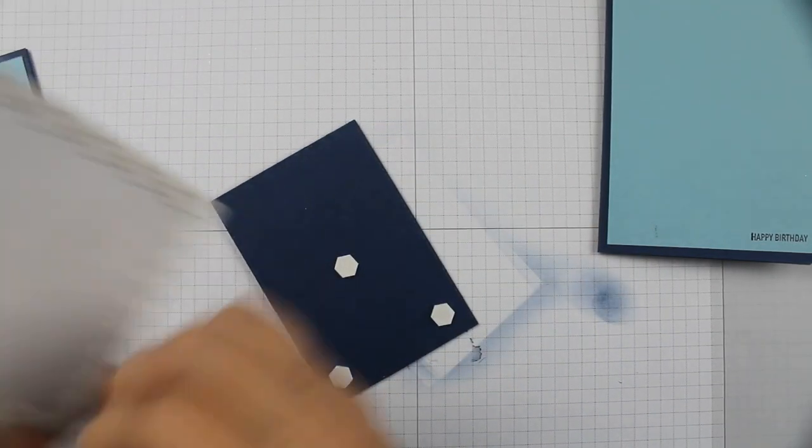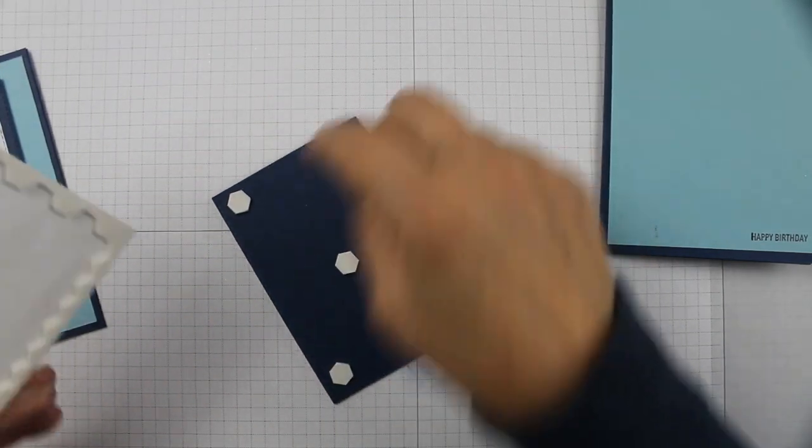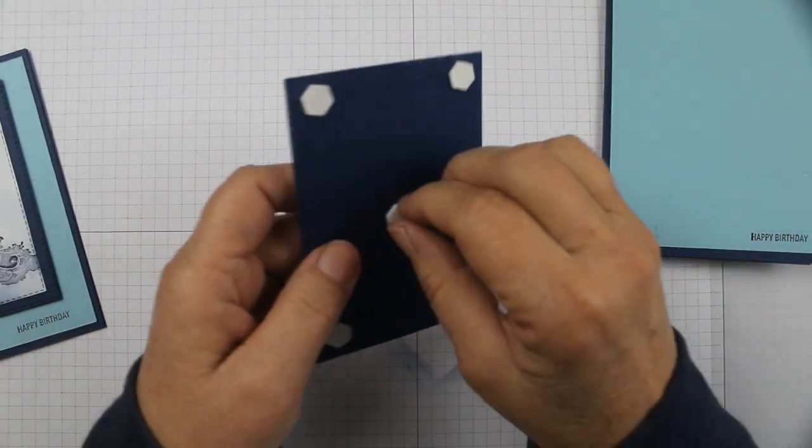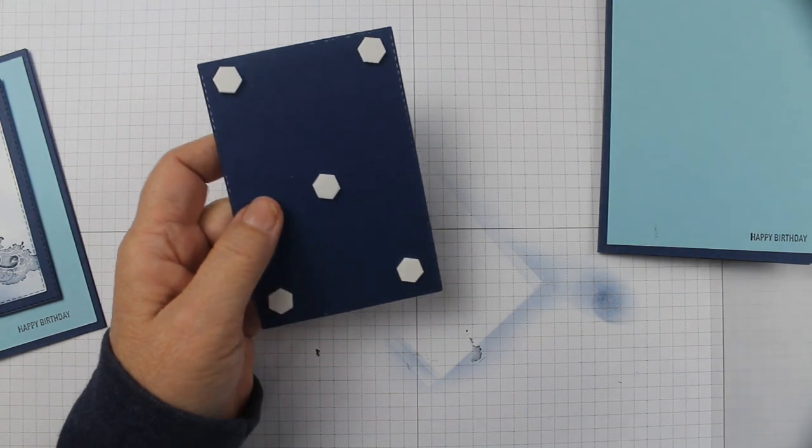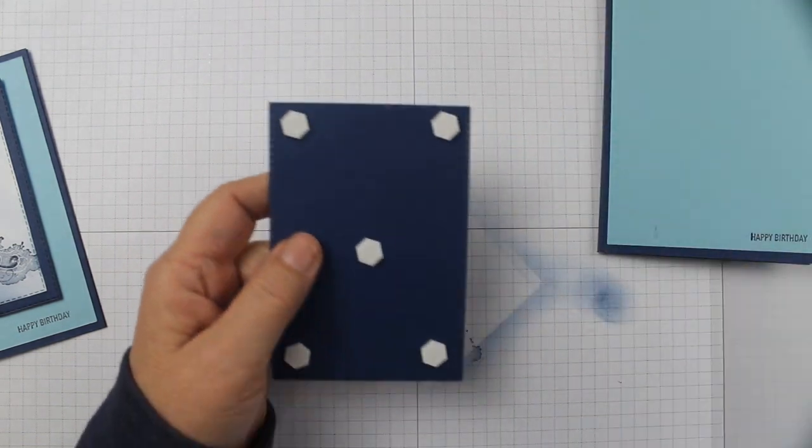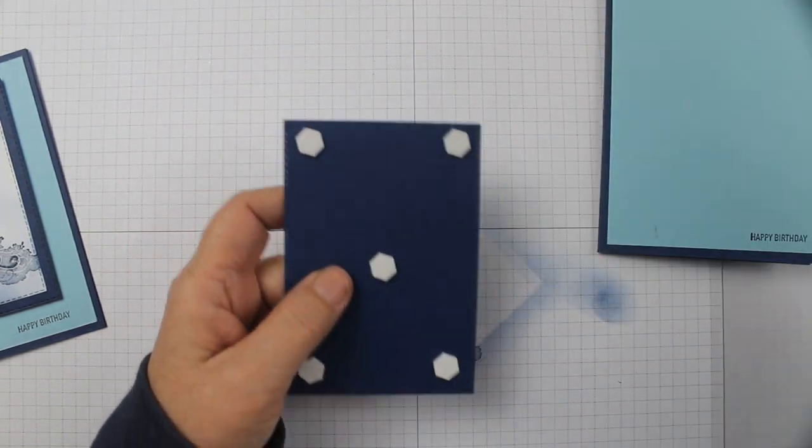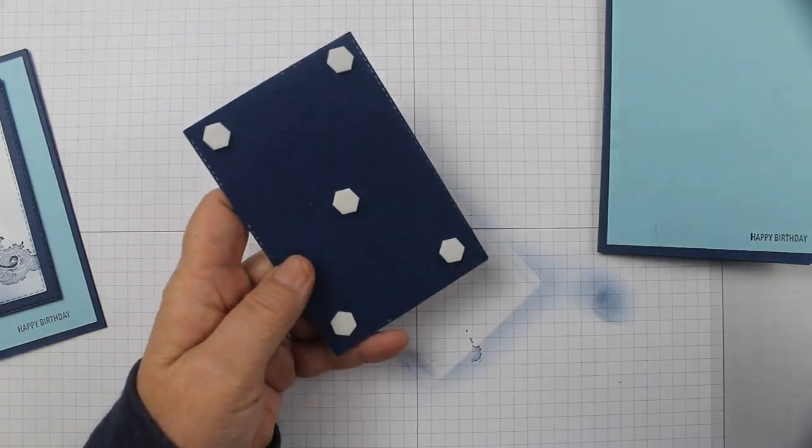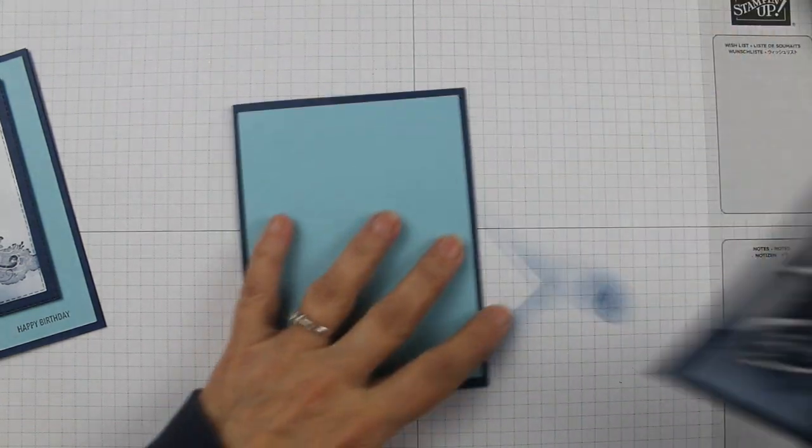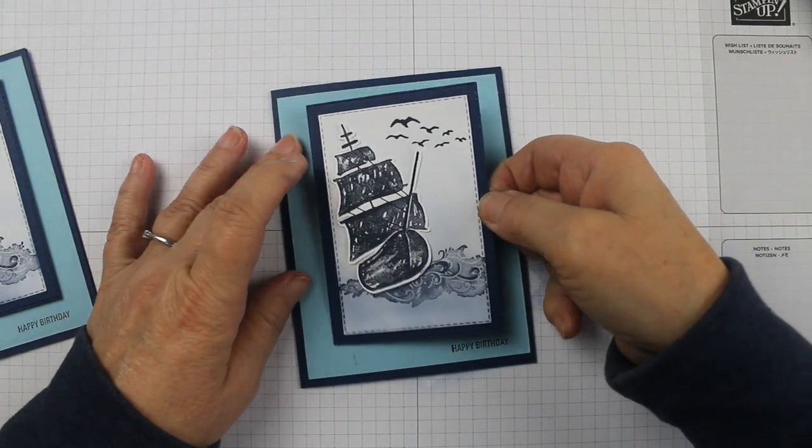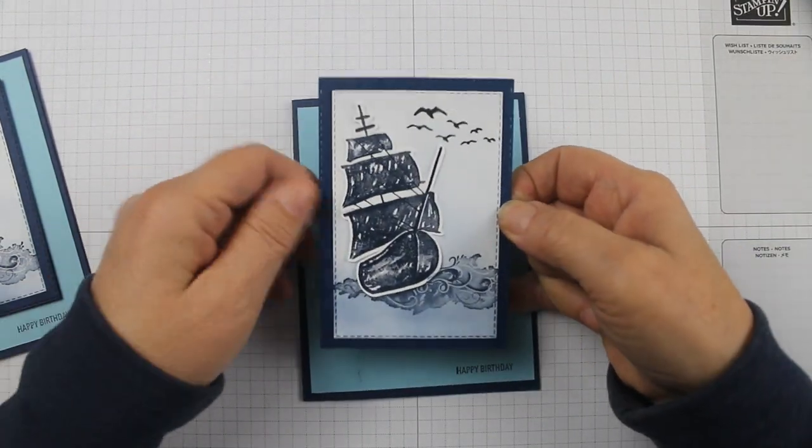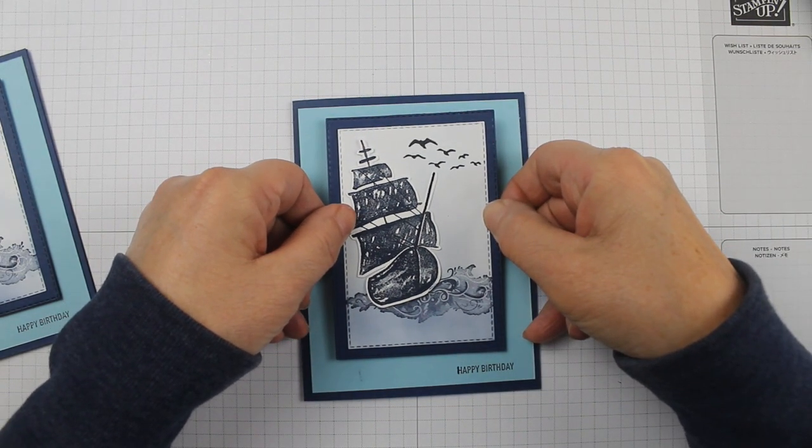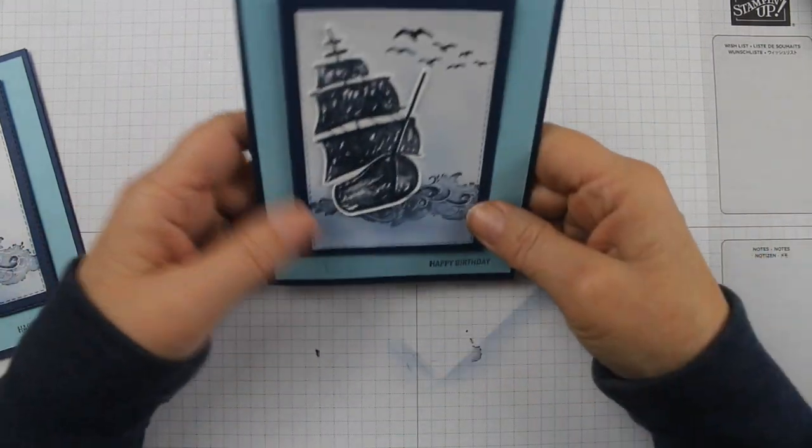Okay, so I'm going to turn this over and I'm going to put dimensionals on the back - one in each corner. I like to put one in each corner and one in the center. I know some people like to put them on the sides as well. I don't always think that's necessary. Things are expensive, so that's how I do it. You can do more if you think it needs it. You peel those off and then you're just going to place this on your card.